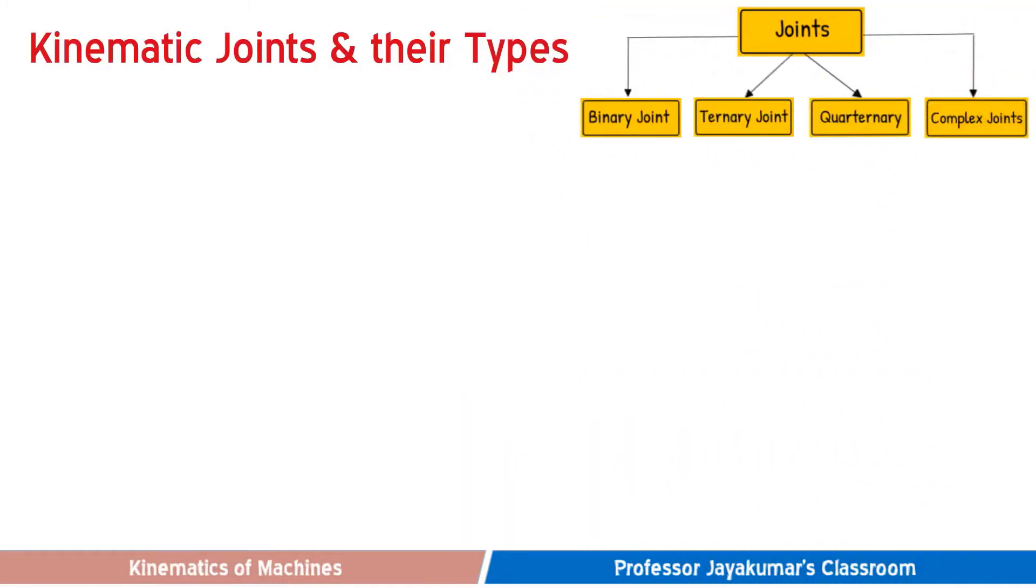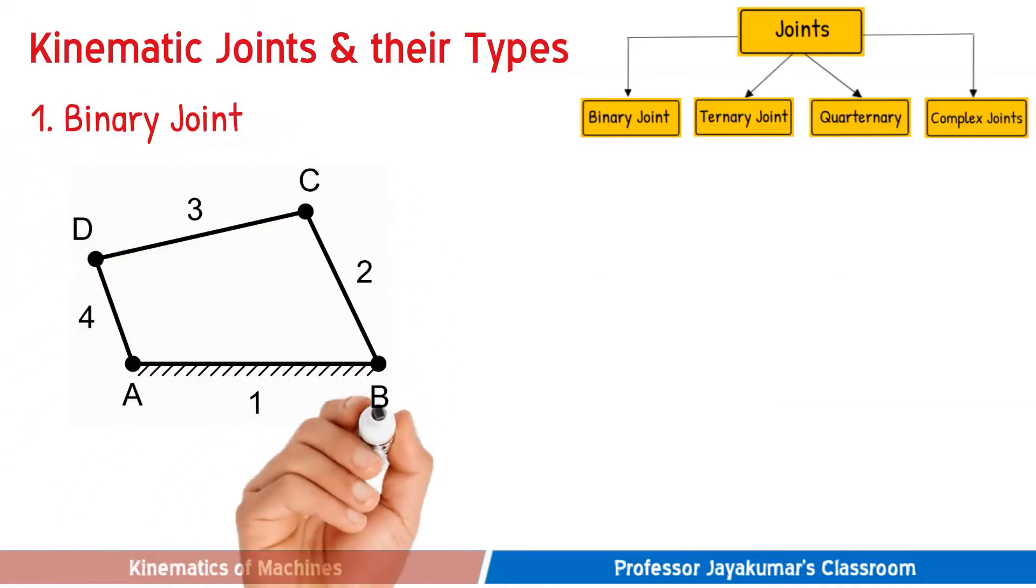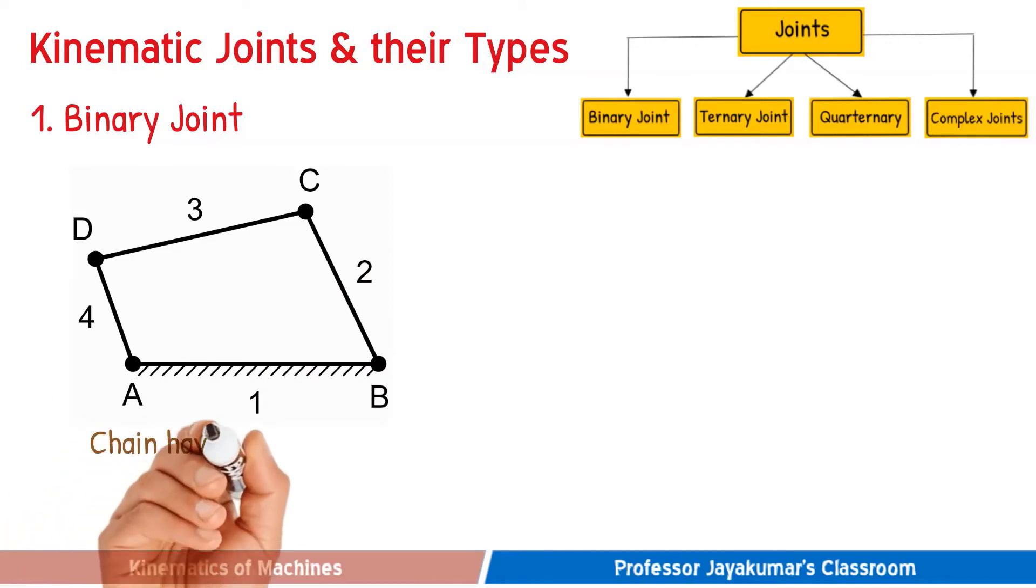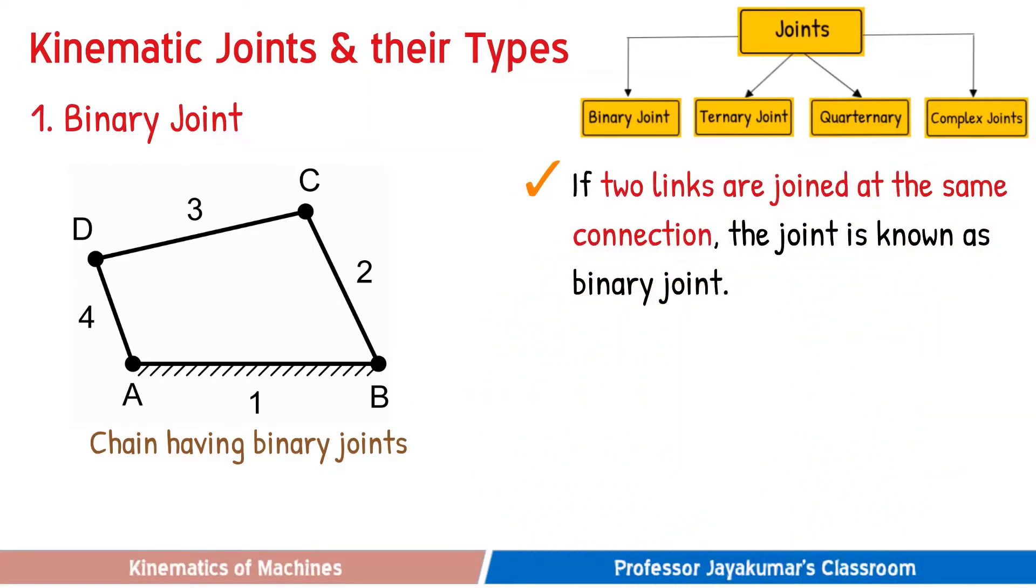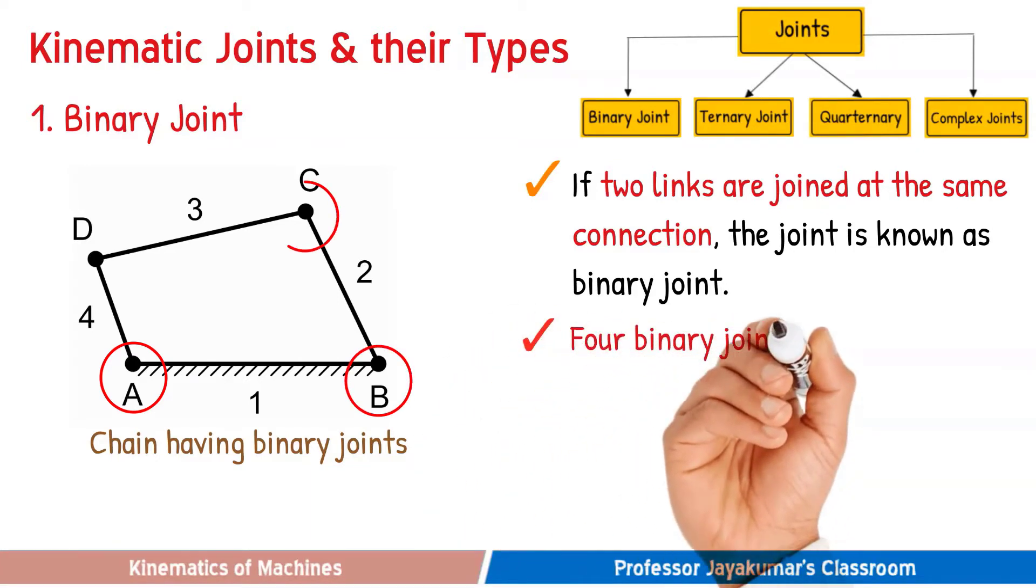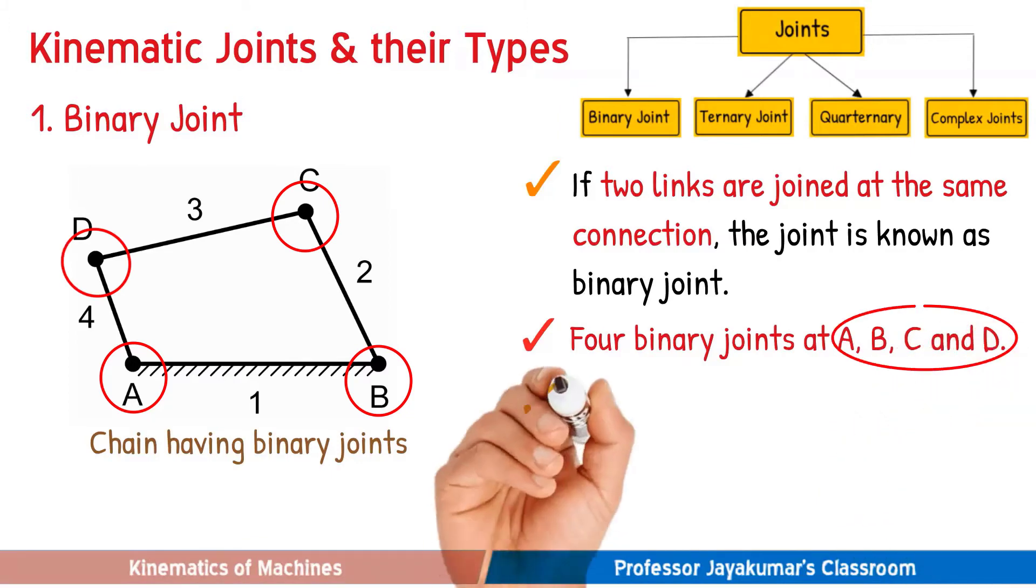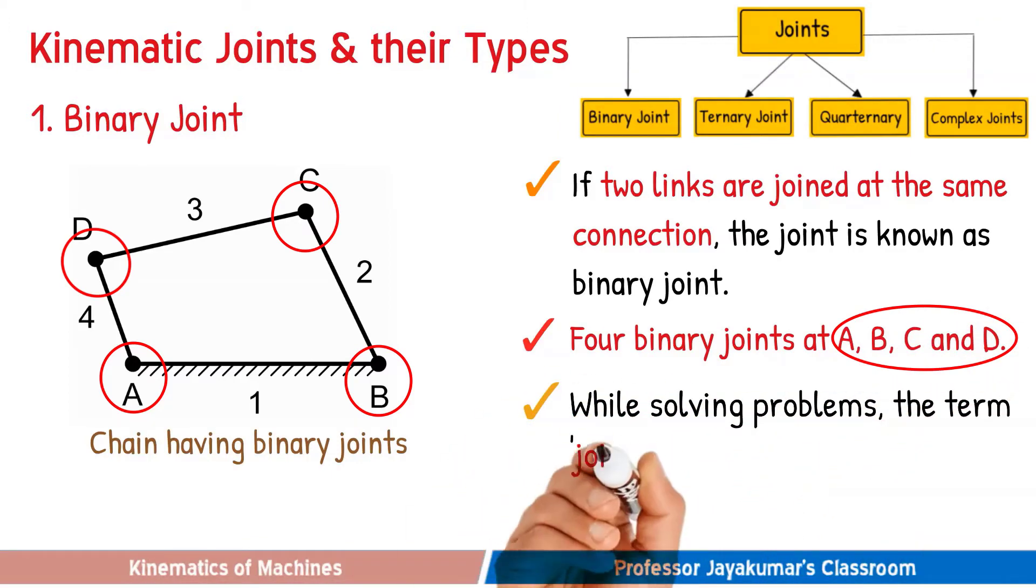Let us start with a binary joint. In this four bar chain we have four joints: A, B, C and D. If two links are joined at the same connection, then that joint is known as binary joint. For example, joint A joins two links, namely 1 and 4, so we can call joint A a binary joint. While solving problems, we need to determine the number of binary joints.